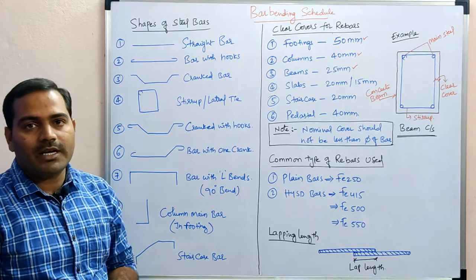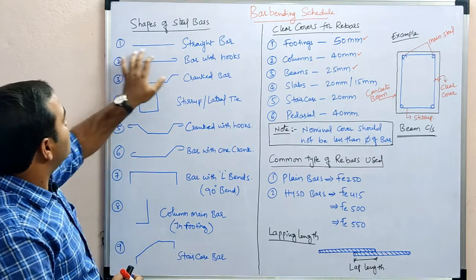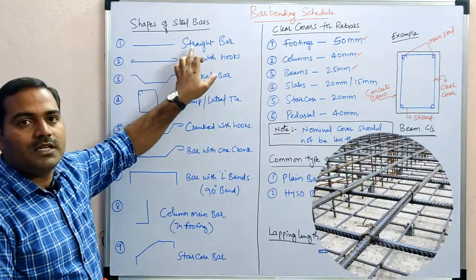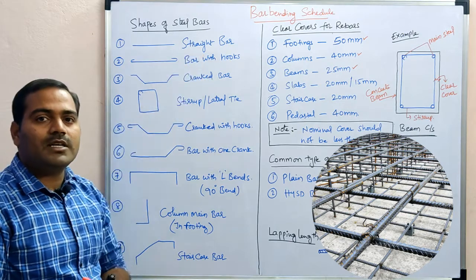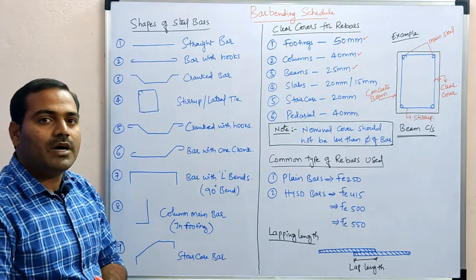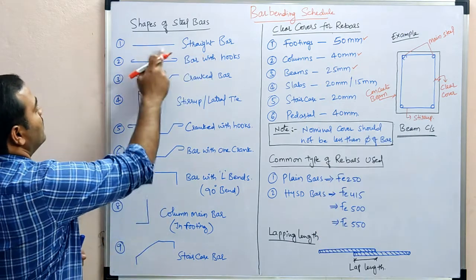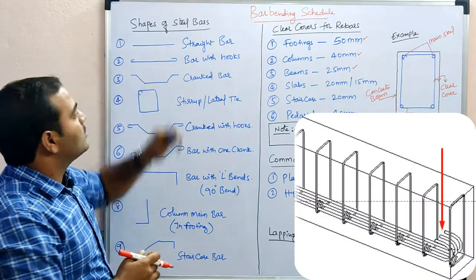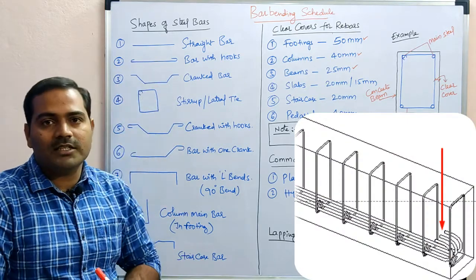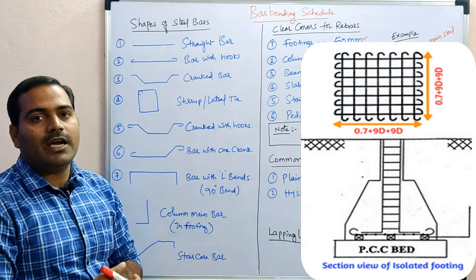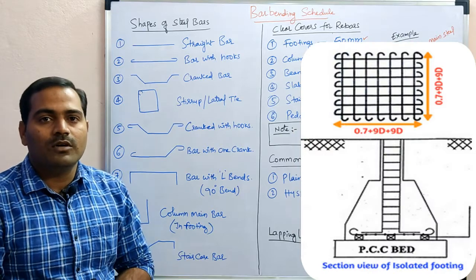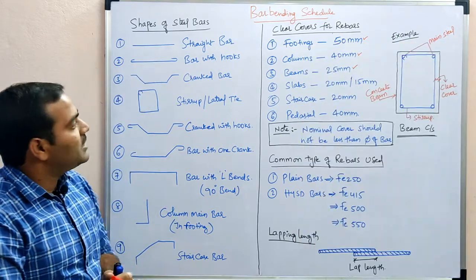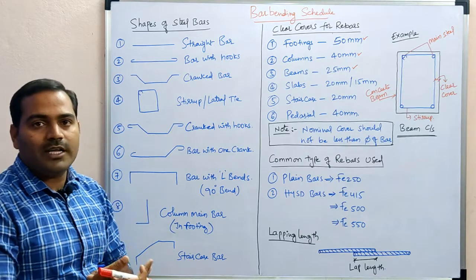Here are the different shaped bars which we come across in different elements. The first one is a straight bar, which we can see in slabs — this is nothing but a distribution bar. The second type is a bar with hooks; this kind of bar is provided in footings and also beams.